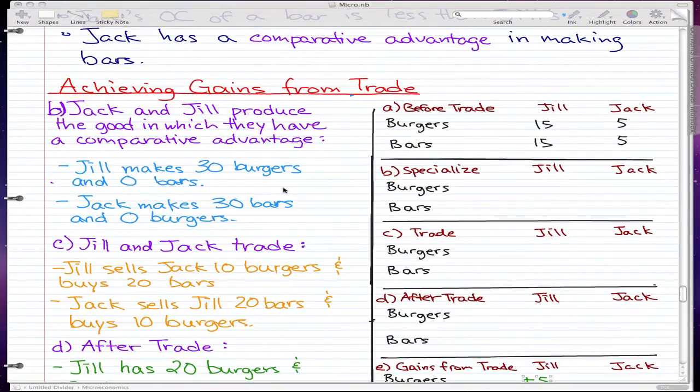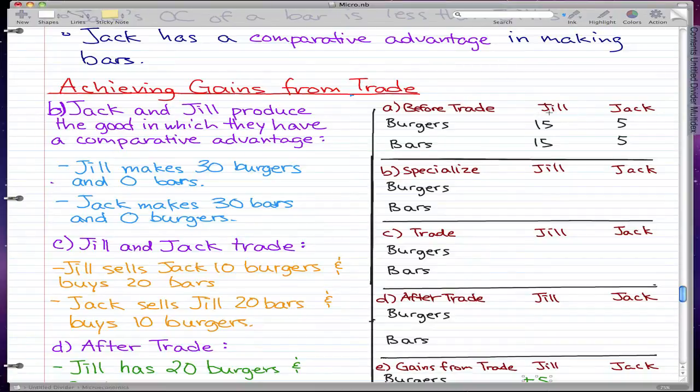So now we're going to go through achieving gains from trade. We know that before the trade, Joe was producing 15 burgers and 15 bars an hour, and Jack was producing 5 burgers and 5 bars an hour.